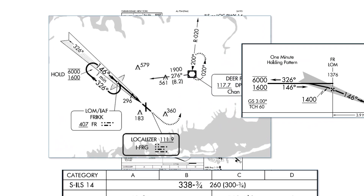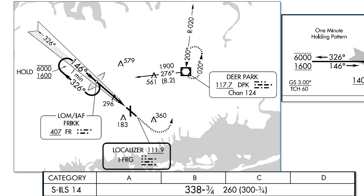Let's get into the real meat and potatoes of the approach plate. Here we're looking at what's called the plan view — looking at the approach from the top down. We see three rectangular boxes: one with the localizer that we saw earlier, then there's the Deerpark VOR, and Frick NDB. Frick says LOM, which stands for Locator Outer Marker — a bit of an outdated but still useful transmitter that equipped aircraft will be able to detect when overflying it. It also says IAF, Initial Approach Fix. This is where the approach begins from.